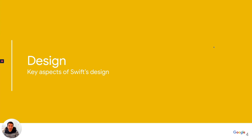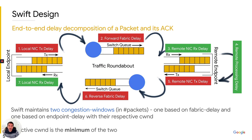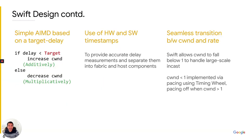Let me highlight a few key design aspects of Swift. Swift is based on delay. In the diagram here, I provide an end-to-end delay decomposition of a packet, showing time spent in the NIC RX and TX queues and in the fabric via the forward and reverse paths. Swift maintains a congestion window in packets — in fact two windows, one for the fabric and one for the endpoint — and the effective congestion window is the minimum of these two. These are controlled using a simple AIMD based on target delay: if measured delay is less than the target, we increase the window additively; otherwise we decrease it multiplicatively. Delay is measured via hardware and software timestamps.